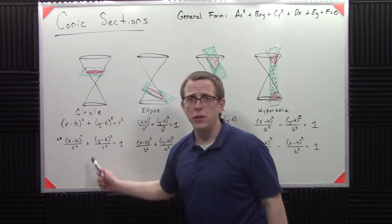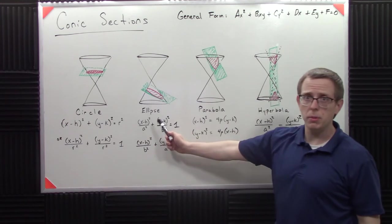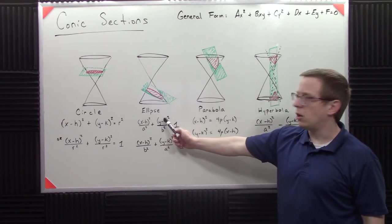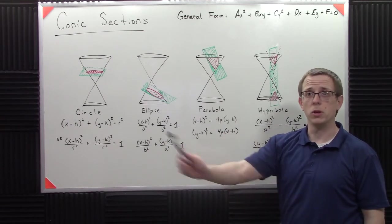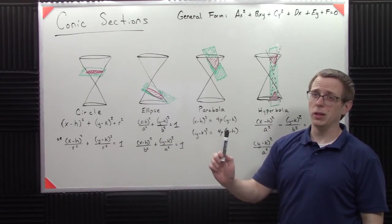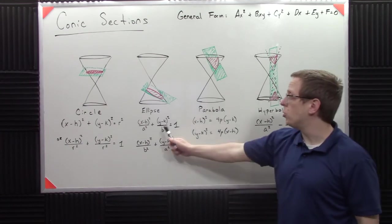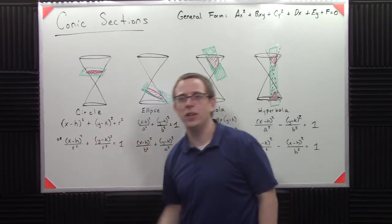So circle, obviously, circle models all kinds of stuff. And ellipse, that's orbits of planets are elliptical. They're elliptical orbits. They're not circular orbits. They're not even really elliptical orbits, but they're kind of, they're closer to ellipses than they are circles.